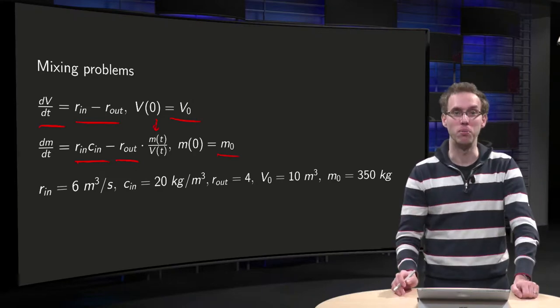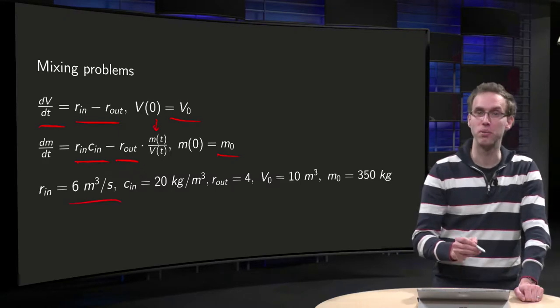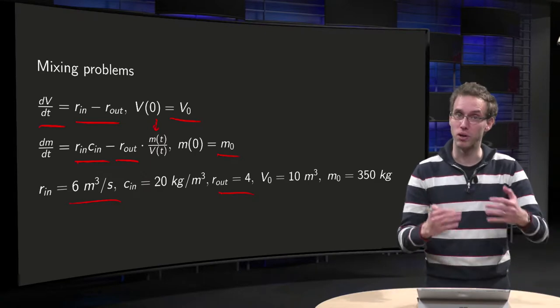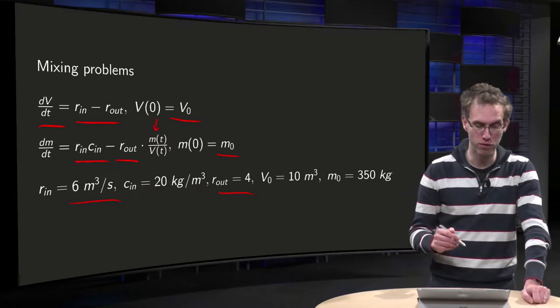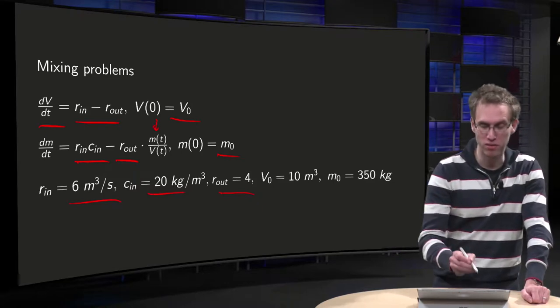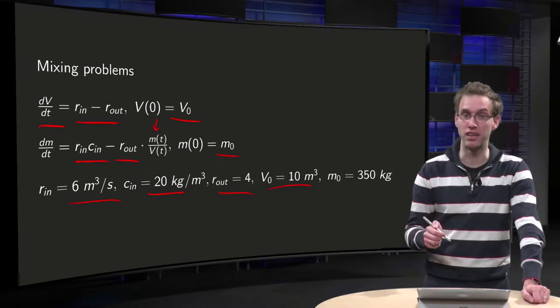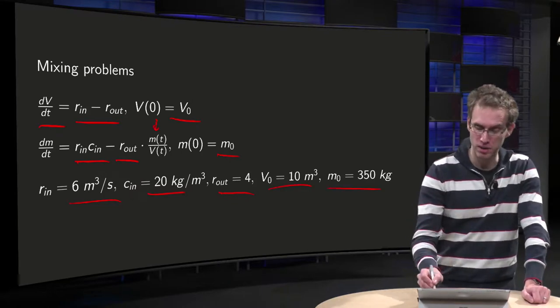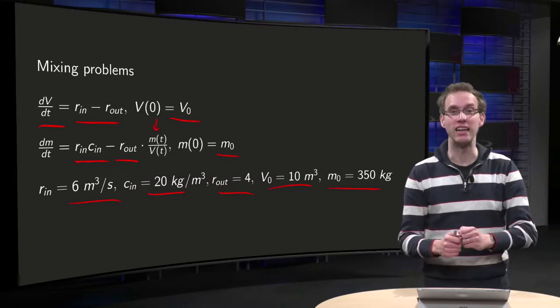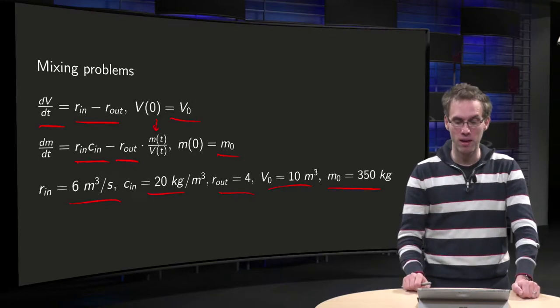Then we have to give some numbers in this explicit example. 6 cubic meters per second as rate in, rate out 4 cubic meters per second, so the tank becomes fuller. Now we have some nonzero inlet concentration of 20 kilograms per cubic meter, some initial volume of 10 cubic meters, and some initial mass of 350 kilograms, which is again the amount of salt which you find typically in salt water.